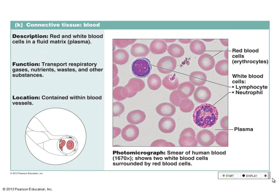Blood is also connective tissue, but its matrix is now totally the opposite of osseous tissue — it's a liquid called plasma. All the fibers and ground substances we talked about are in here, but in liquid form under normal circumstances. When you cut yourself and a clot forms, a chemical response takes those normally liquid proteins and turns them into fibers.